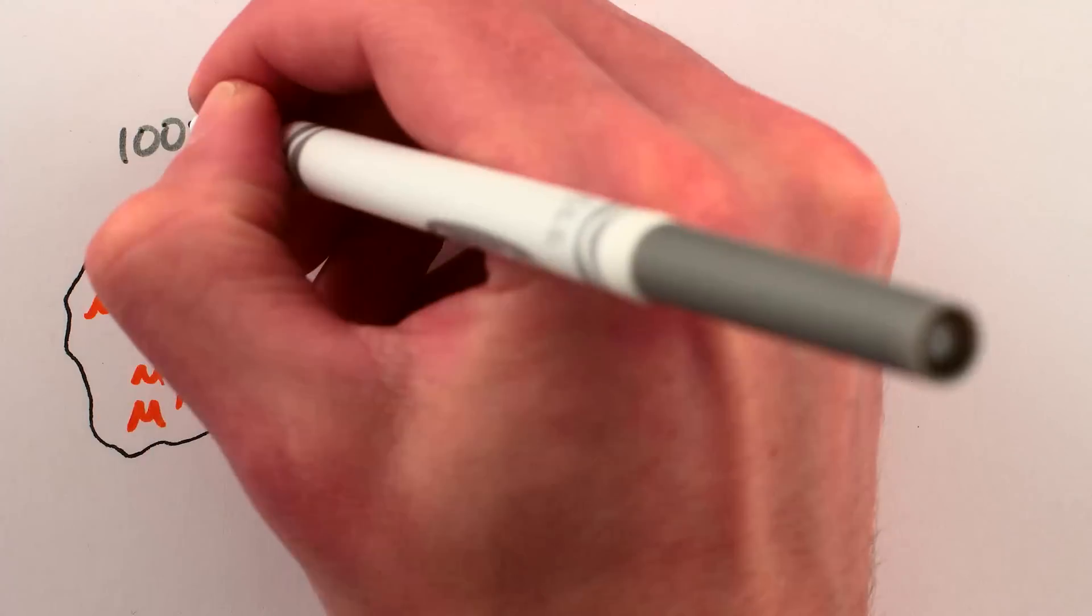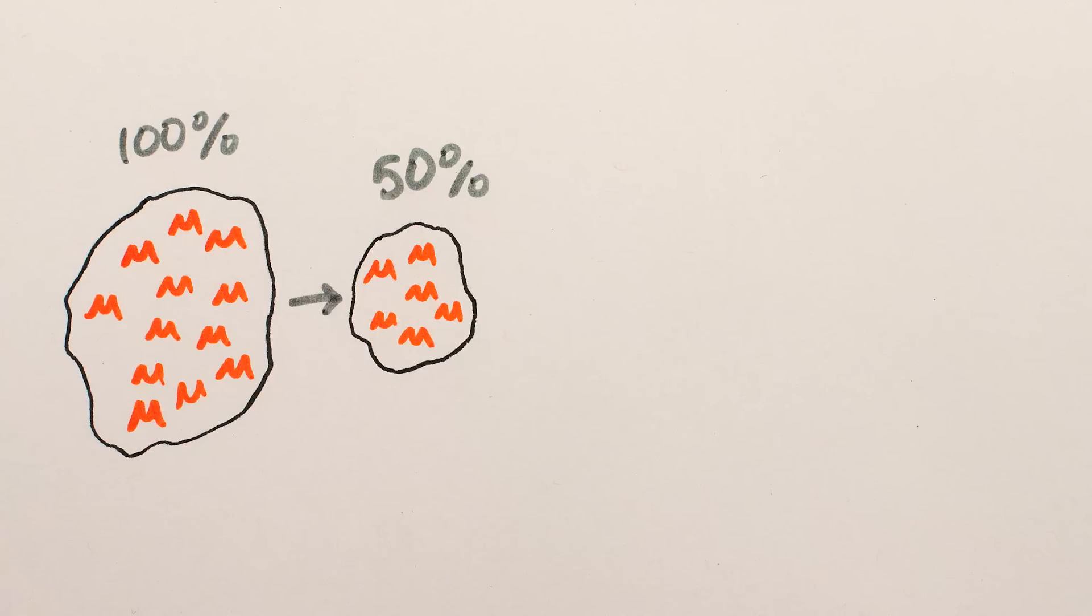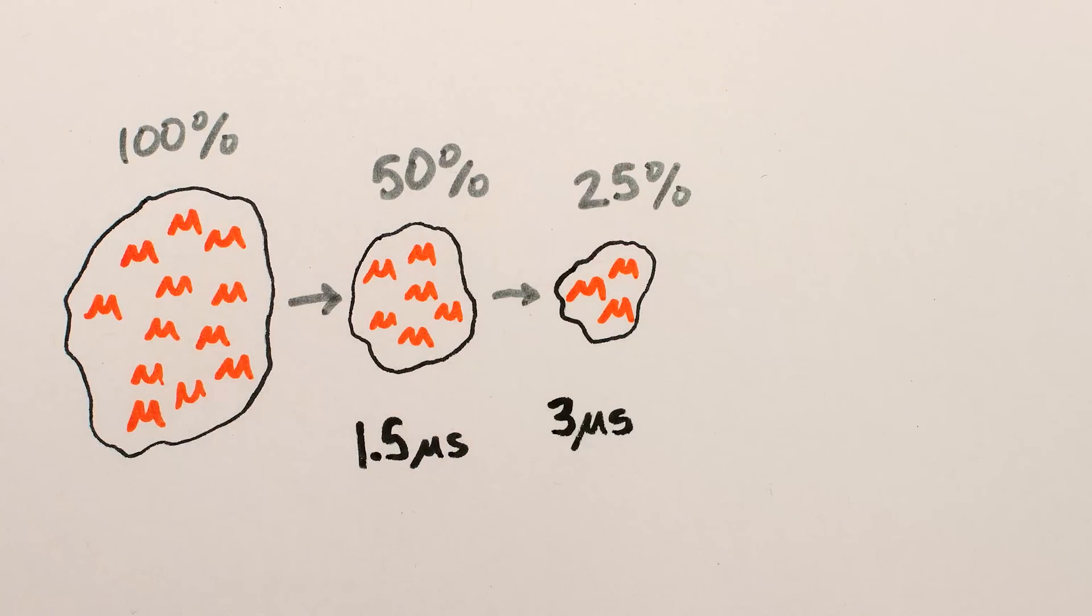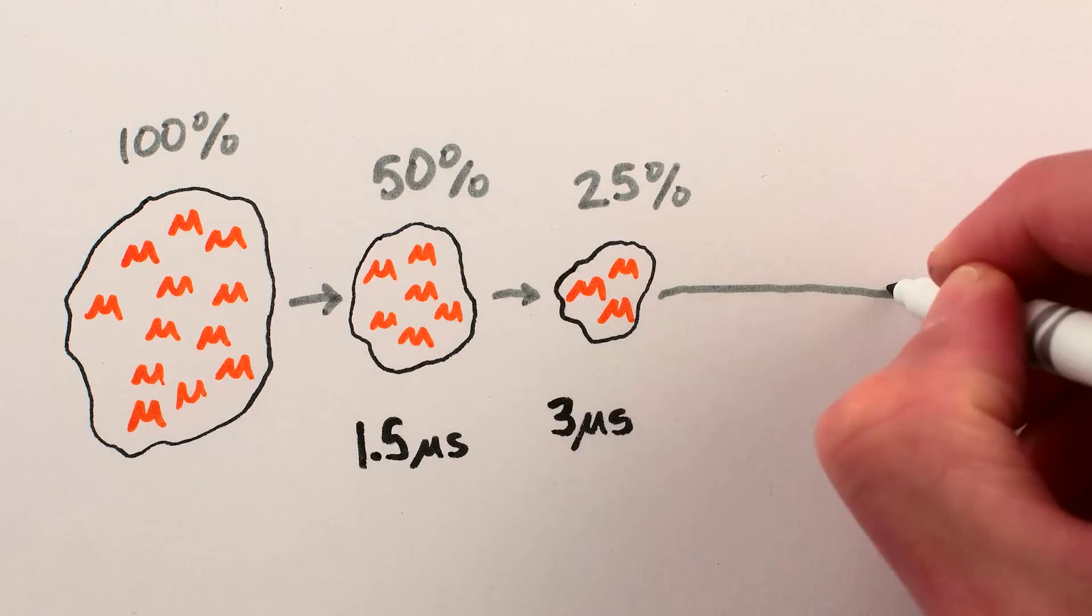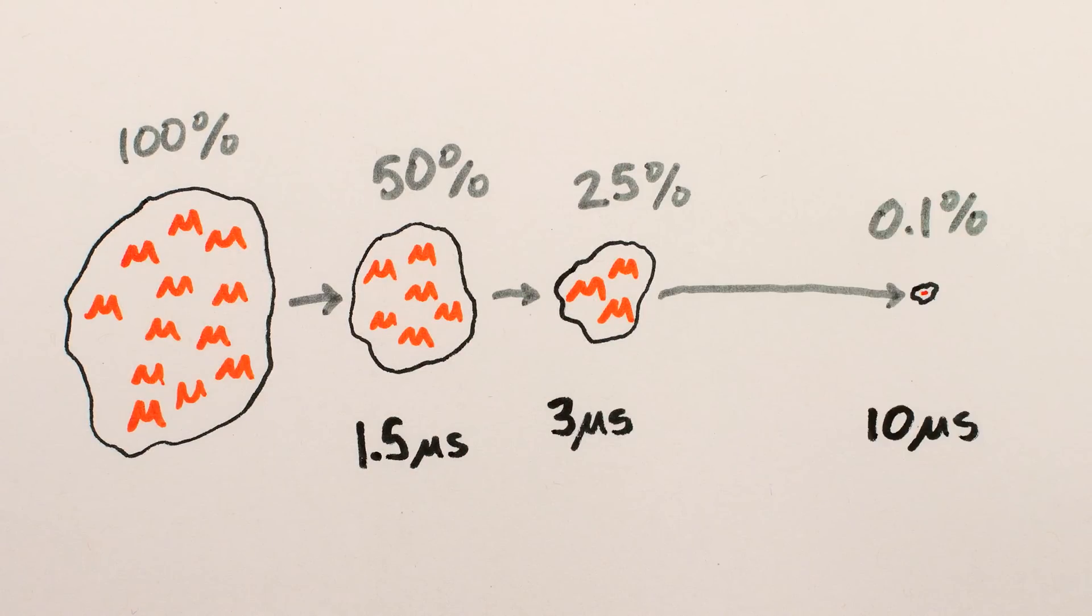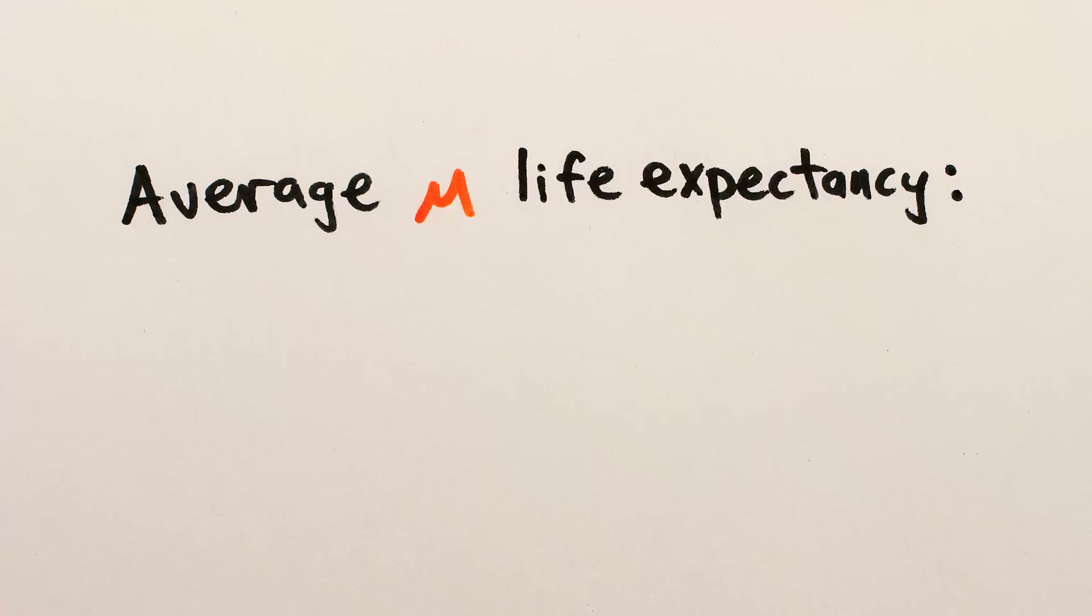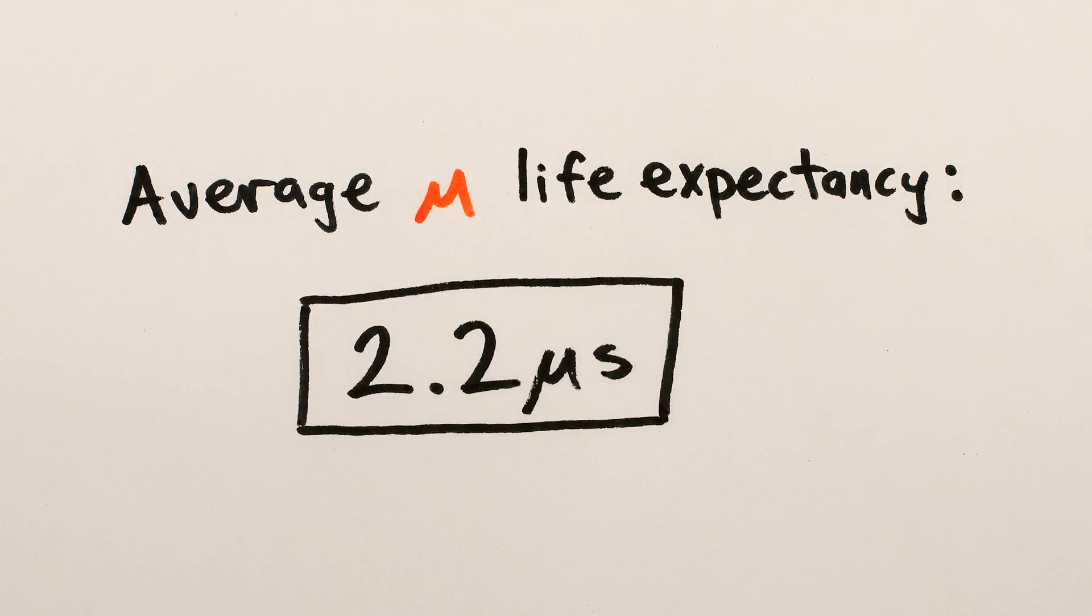Anyway, the point is that if you have a bunch of muons, you'll only be left with about 50% after 1.5 microseconds, and 25% after 3 microseconds, and after 10 microseconds there will only be 0.1% of the muons left. Muons don't live very long, just 2.2 microseconds on average.